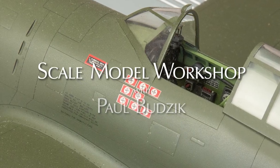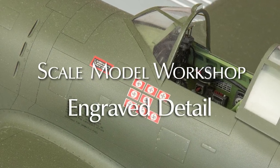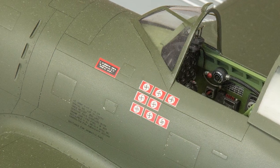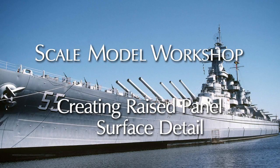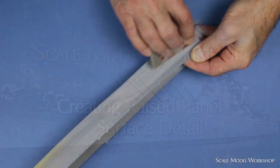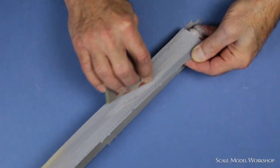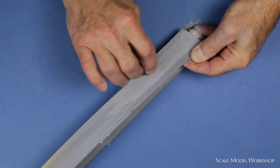The outside surfaces of most all models contain some amount of raised or recessed detail. In my video on hull plating for small scale ships, I presented a step-by-step description of two techniques for creating raised panel detail.